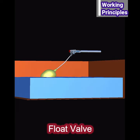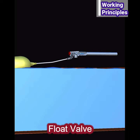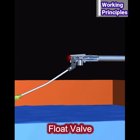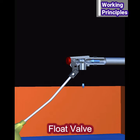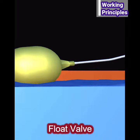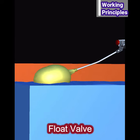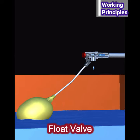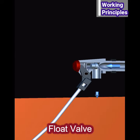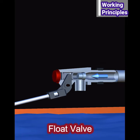The valve will block the flow of water through the pipe as the stem rises and creates a tight seal. The stem connects the valve to the float device. In some applications, the stem is also used to adjust when the water flow will be blocked.